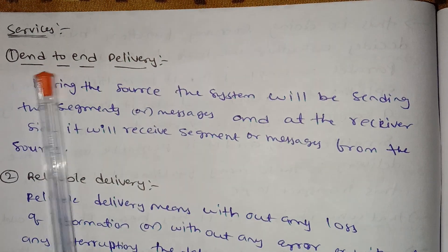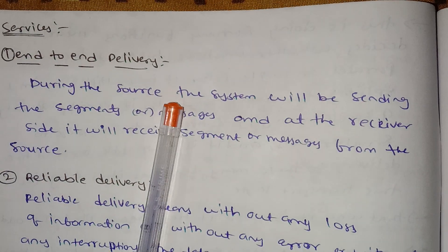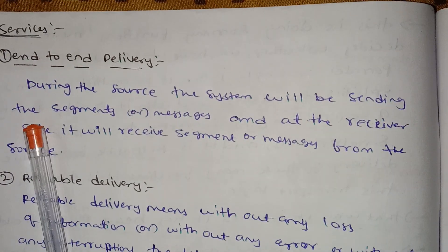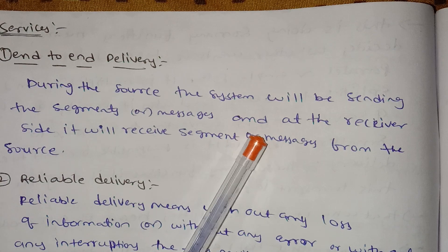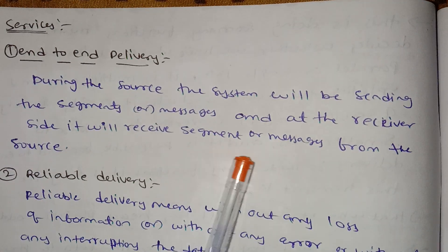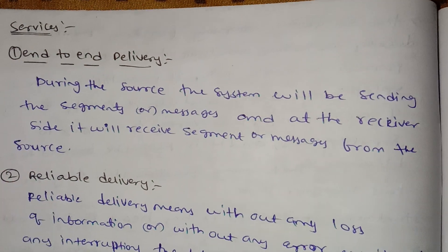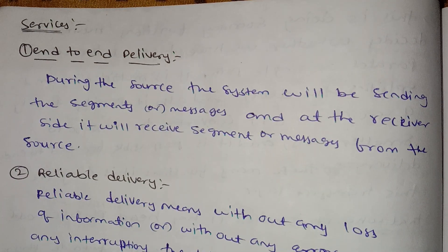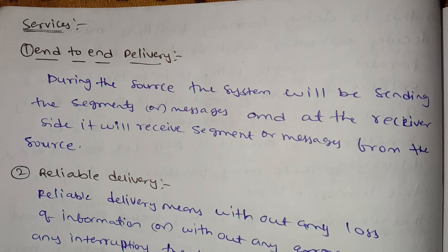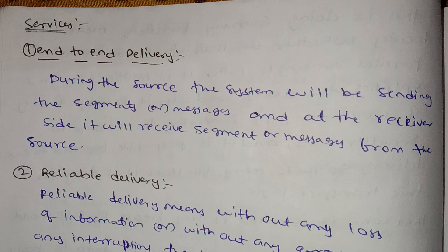The first service is end-to-end delivery. During transmission, the source system will be sending the segments or messages, and at the receiver side it will receive those segments from the source.